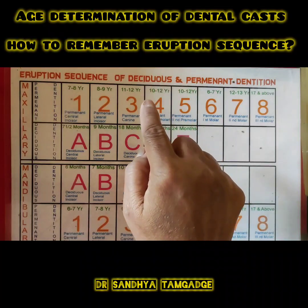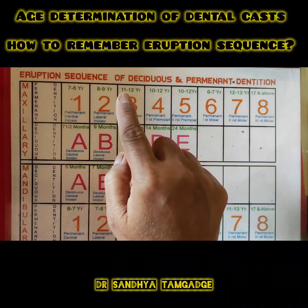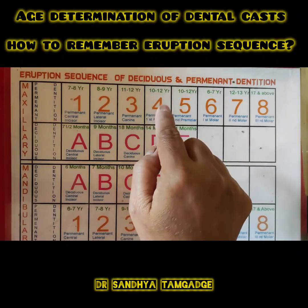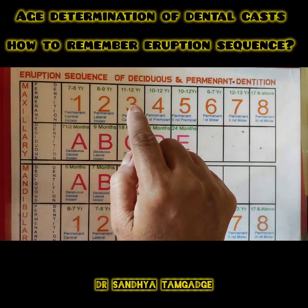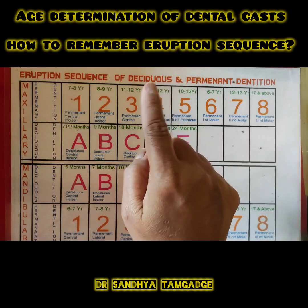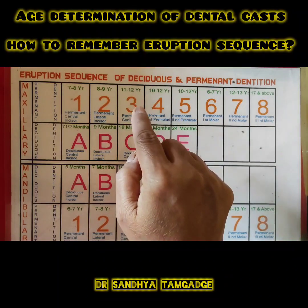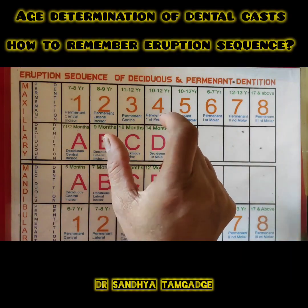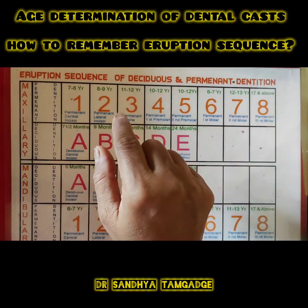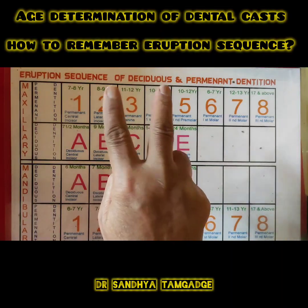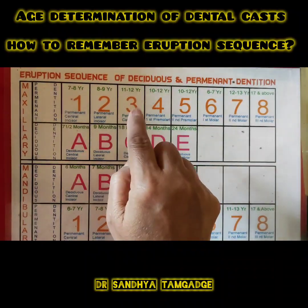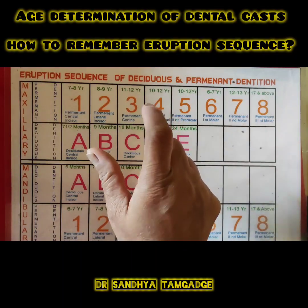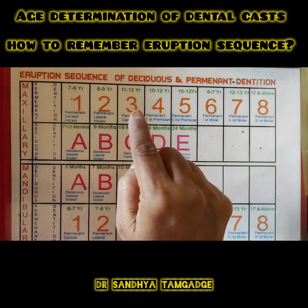In the maxillary arch, premolars erupt at 10 to 12 and the upper canine erupts later at 11 to 12. By the time the maxillary canine begins erupting, incisors and premolars on both sides have already erupted, leaving insufficient space for this bulky-crowned, bulky-rooted tooth. That is why crowding and malocclusion involving the maxillary canine is a frequent phenomenon — it often erupts buccally or palatally.